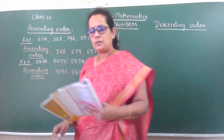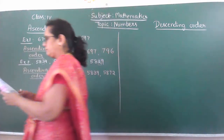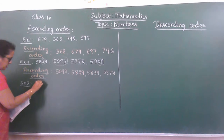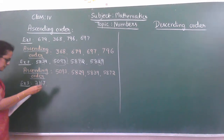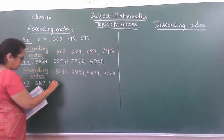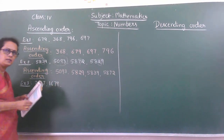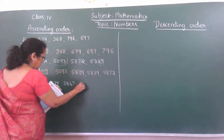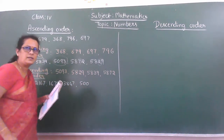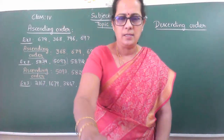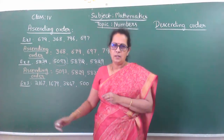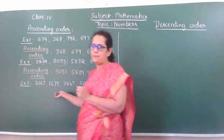So write another example sum. Example 3: 2,167; 1,679; 3,847; and 500. We will discuss about this example sum. You have to write this in ascending order.